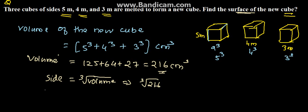The cube root of 216 comes to 6, so 6 centimeters is the side. From this we can derive the surface area.